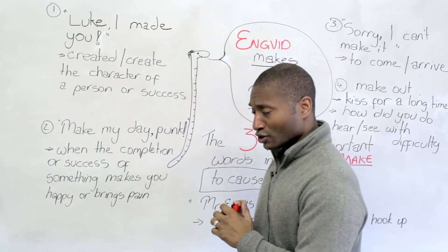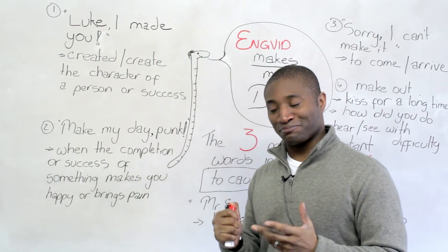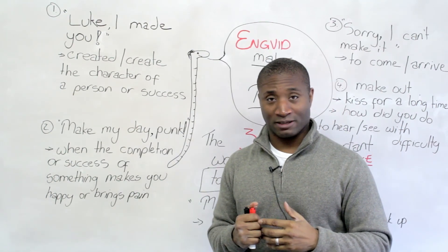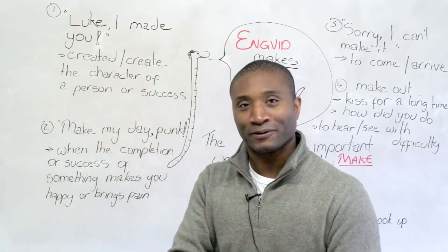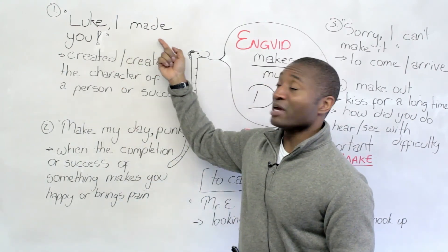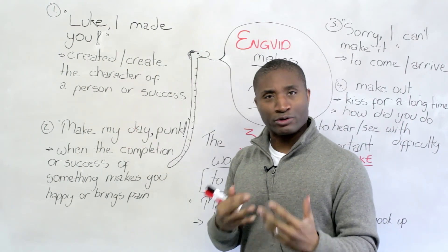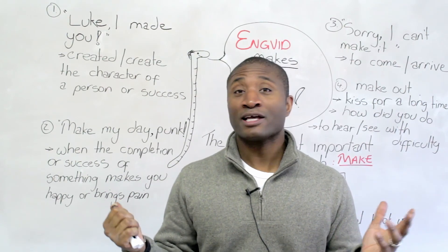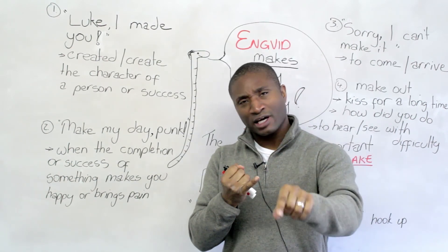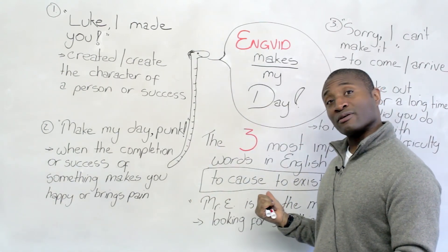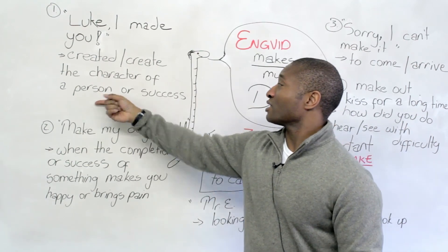The first example you may recognize: 'Luke, I am your father.' But what did he really mean? Two things actually. Number one, he was saying, I'm your father — I made you, I created you. But also, the fact that you are a Jedi Knight — he made him. So when someone says 'I made you,' they don't just mean physically created you. They mean they created the character of you — your character or your success. So if you're in business and you become very rich and wealthy, and somebody says 'I made you,' they mean I helped create that success. Without me, it wouldn't have happened. Caused it to exist. So that's for character or your success.